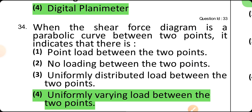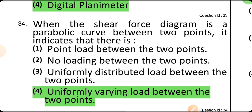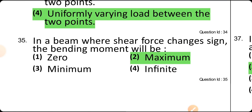When the shear force diagram is a parabolic curve between two points, it indicates that there is a uniformly varying load (UVL) between those two points. In a beam where the shear force changes its sign, the bending moment will be maximum.